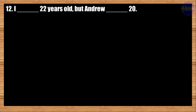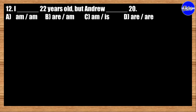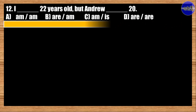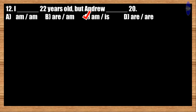Number twelve: I blank 22 years old, but Andrew blank 20. A: am, am; B: are, am; C: am, is; D: are, are. The correct answer is option C. I am 22 years old, but Andrew is 20.